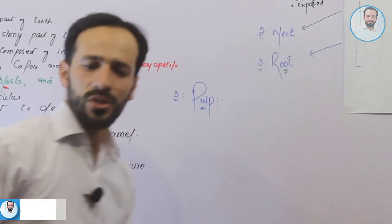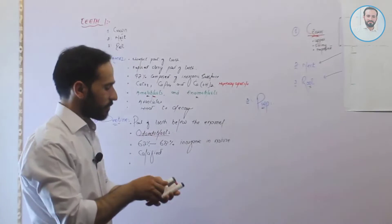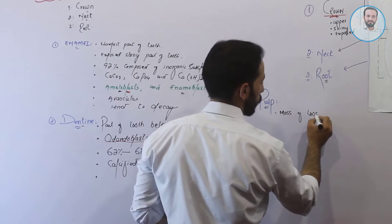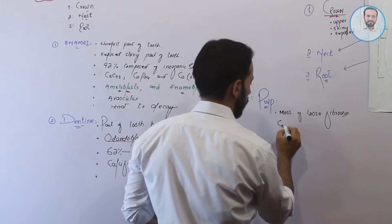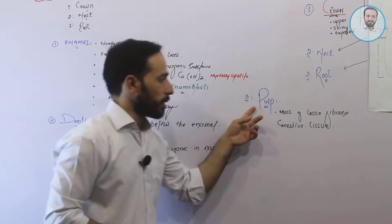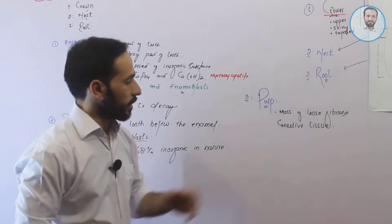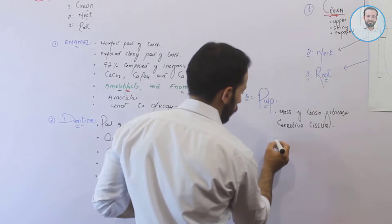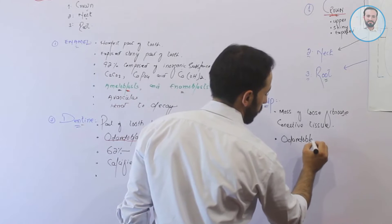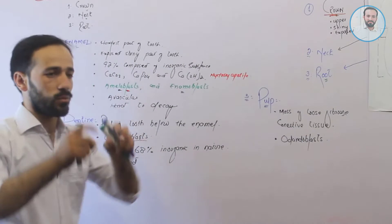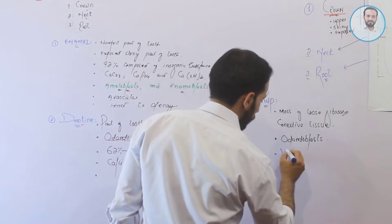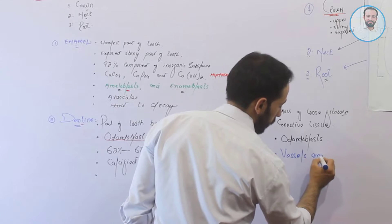This pulp is a closed tube in which arteries, veins, and nerves are moving up towards the upper parts of the tube. Pulp is a mass of loose fibrous connective tissue. The type of cells which are secreting the mass of the pulp are also called odontoblasts.